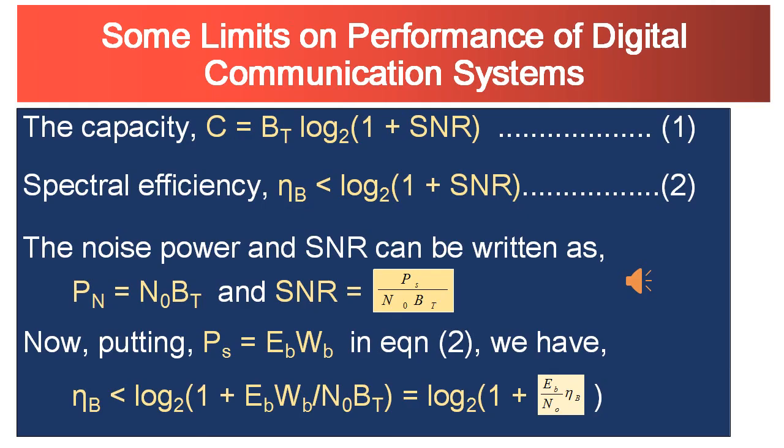If we assume an ideal bandpass filter of bandwidth Bt, then the noise power will be PN = N0Bt and SNR will be PS/(N0Bt). Most communication system engineers like to quantify performance with Eb/N0, and PS = Eb·Wb. If you put this value in the equation, the spectral efficiency becomes ηB < log₂(1 + Eb/N0 · ηB).